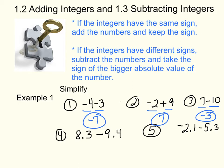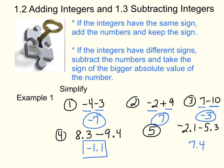Number 4: 8.3 minus 9.4. Since 8.3 is positive and 9.4 is negative, they have different signs, so subtract: 9.4 minus 8.3 gives 1.1. Since the absolute value of negative 9.4 is bigger, the answer is negative 1.1. Number 5: negative 2.1 minus 5.3. Same sign — add them to get 7.4, and keep the sign, so the answer is negative 7.4.